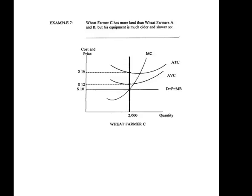Total revenue is P times Q: 2,000 units times $10 equals $20,000. Total cost is average total cost times quantity: $16 times 2,000 equals $32,000. Revenue minus cost: $20,000 minus $32,000 means they're losing $12,000. Loss per unit: ATC minus price is $16 minus $10, giving a $6 loss per unit—same as $12,000 divided by 2,000.